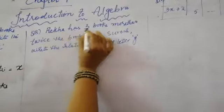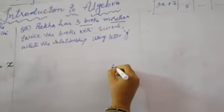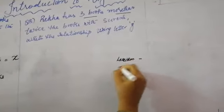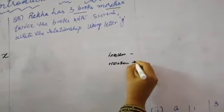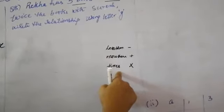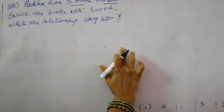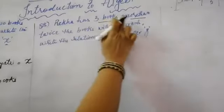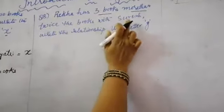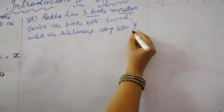Question number 8 is also the same type. Read carefully: Rekha has three books more than twice the books with Suresh. While reading, try to understand the question. More means plus; less than means minus; times means multiplication. So 'three books more' means plus three.